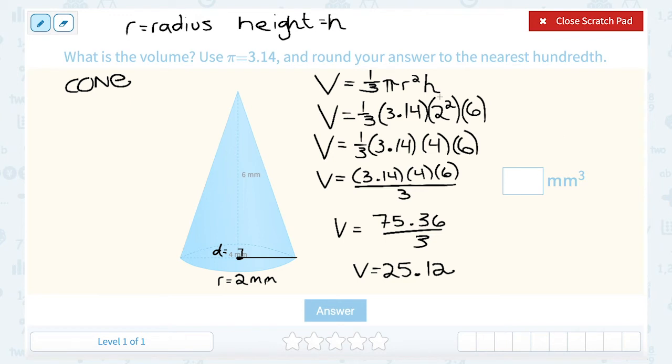But to take a second to look at why is our answer in cubed, well, one answer is because it's volume. So volume is going to be in cubic units. The other answer is if you look at our algebra here, we have multiplied millimeters times millimeters times millimeters. We essentially multiplied millimeters by itself three times. Because, okay, the one-third doesn't have any unit and neither does pi.